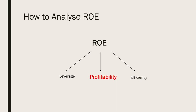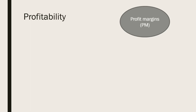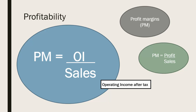Profitability of a firm can be measured in a few different ways. A common way to look at profitability is to look at profit margins, which are often expressed as a measure of profitability as a portion of sales. We will use operating income after tax (OI) as our measure of profit when calculating profit margins, based on our restated financial statements.